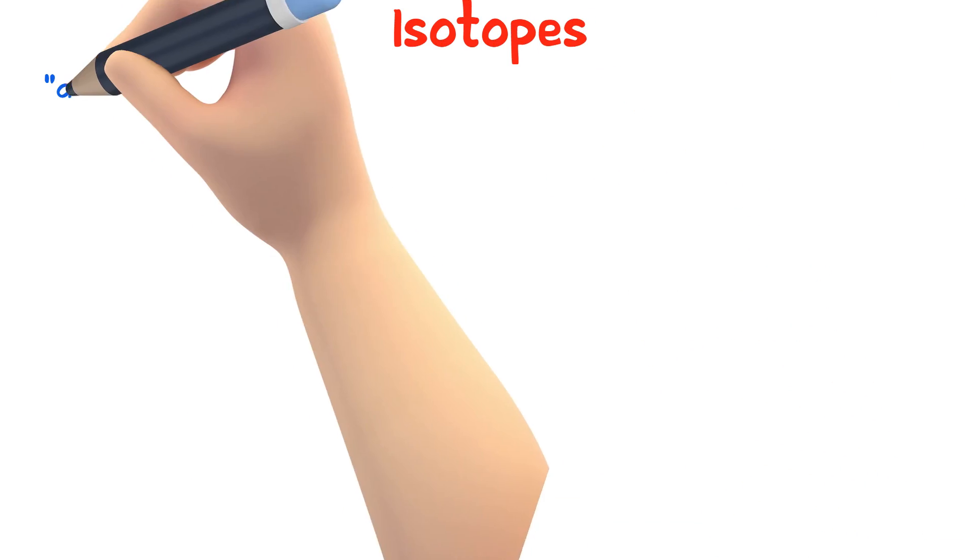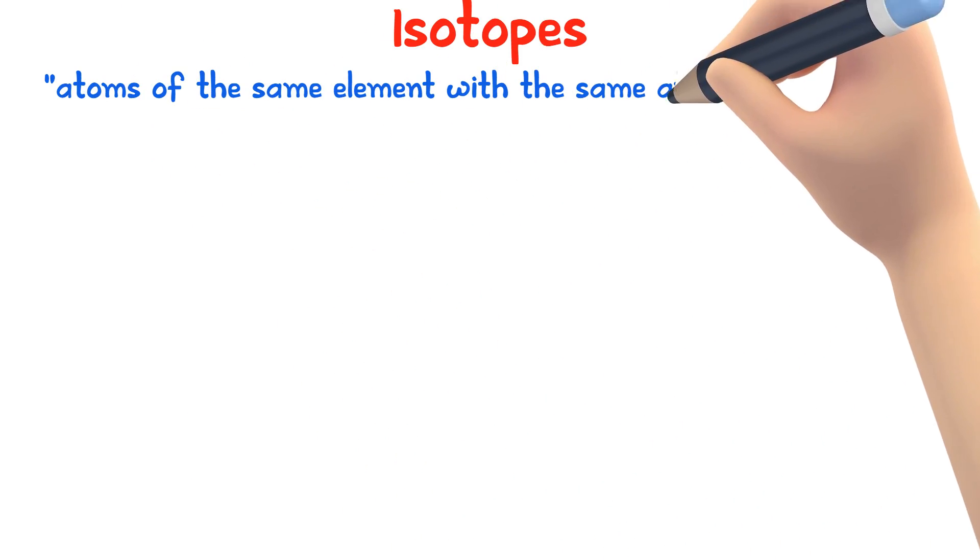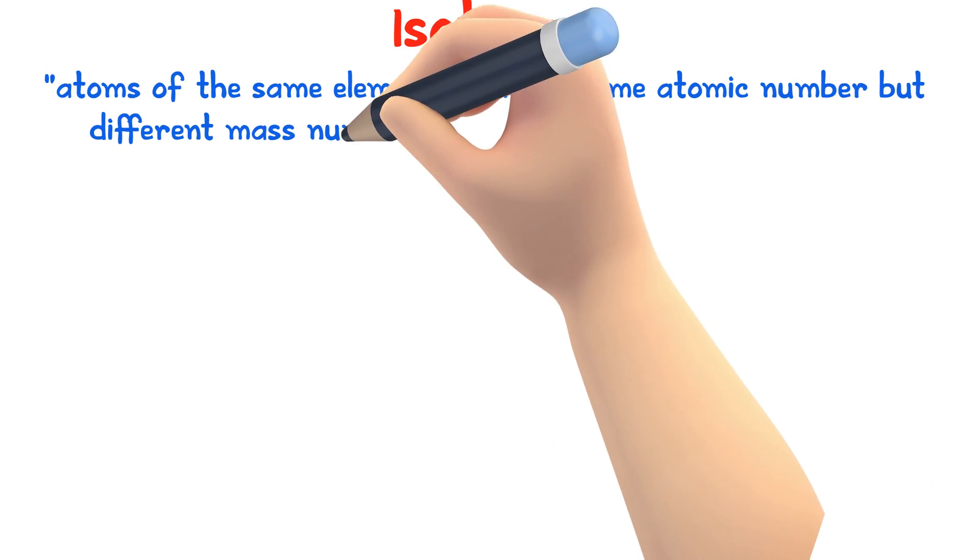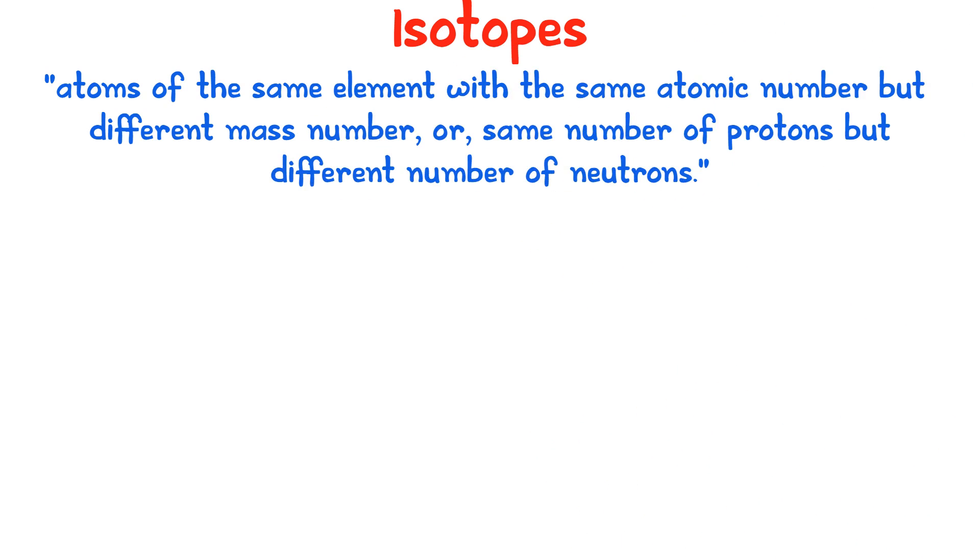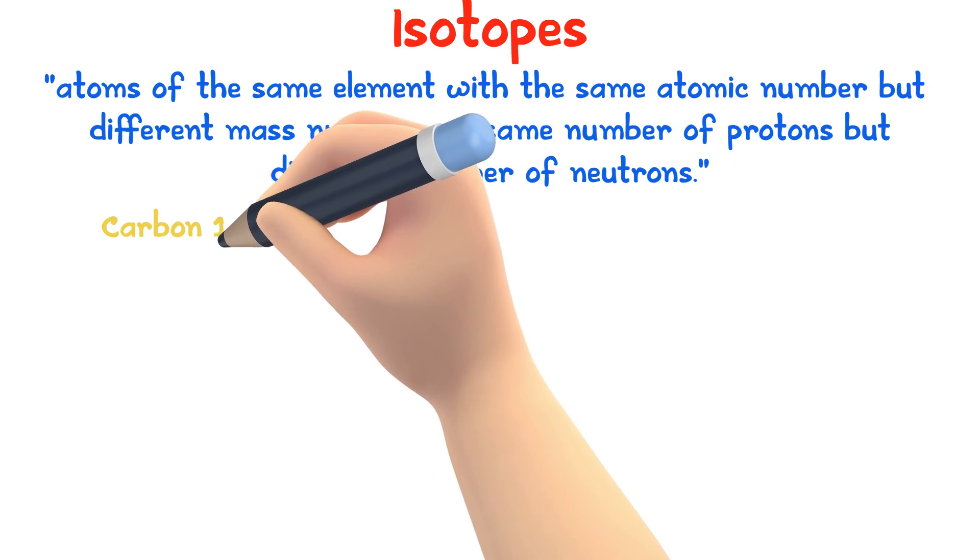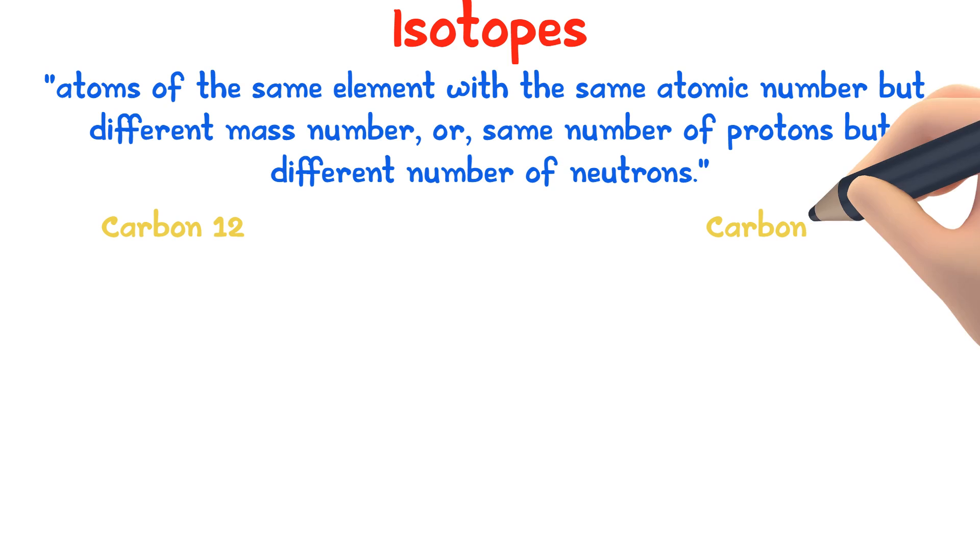An isotope is an atom of an element with the same atomic number but different mass number or the same number of protons but different number of neutrons. Here are two isotopes of carbon, one with a mass number of 12 and the other with a mass number of 14.